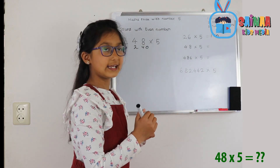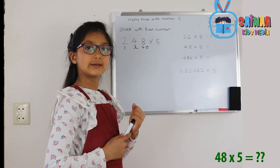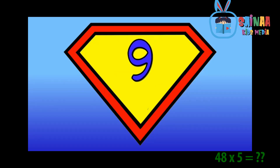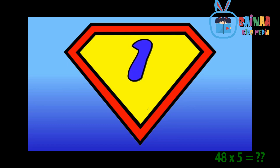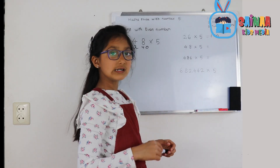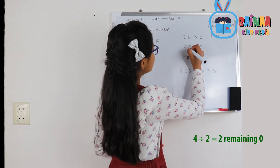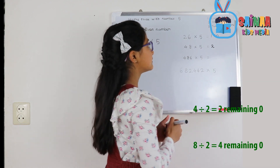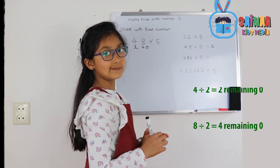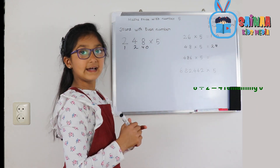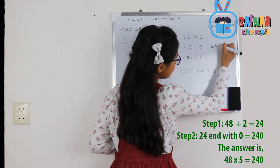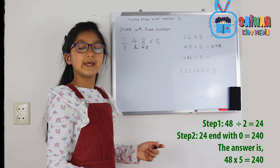Now you're going to guess this one. I'll give you 10 seconds. 4 divided by 2 is 2, 8 divided by 2 is 4, and at last a 0. Check your answers — maybe it's good!